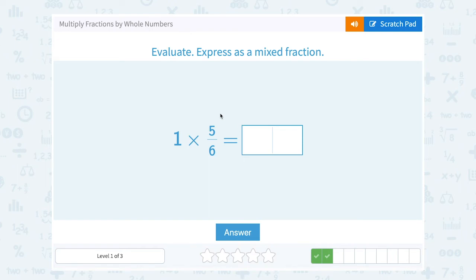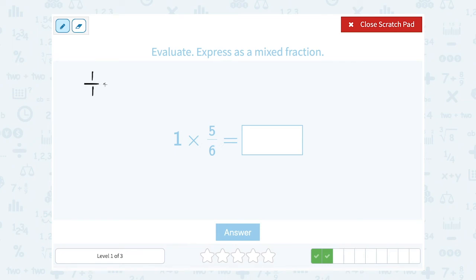1 times 5 over 6. Multiplying by 1 doesn't change my value at all, so this would simply be 5 over 6. If you wanted to, you could write 1 as a fraction and multiply straight across, but it's still going to give you the same answer. On the top, 1 times 5 is 5, and on the bottom, 1 times 6 is 6. That doesn't simplify or reduce at all, so my answer is simply 5 over 6.